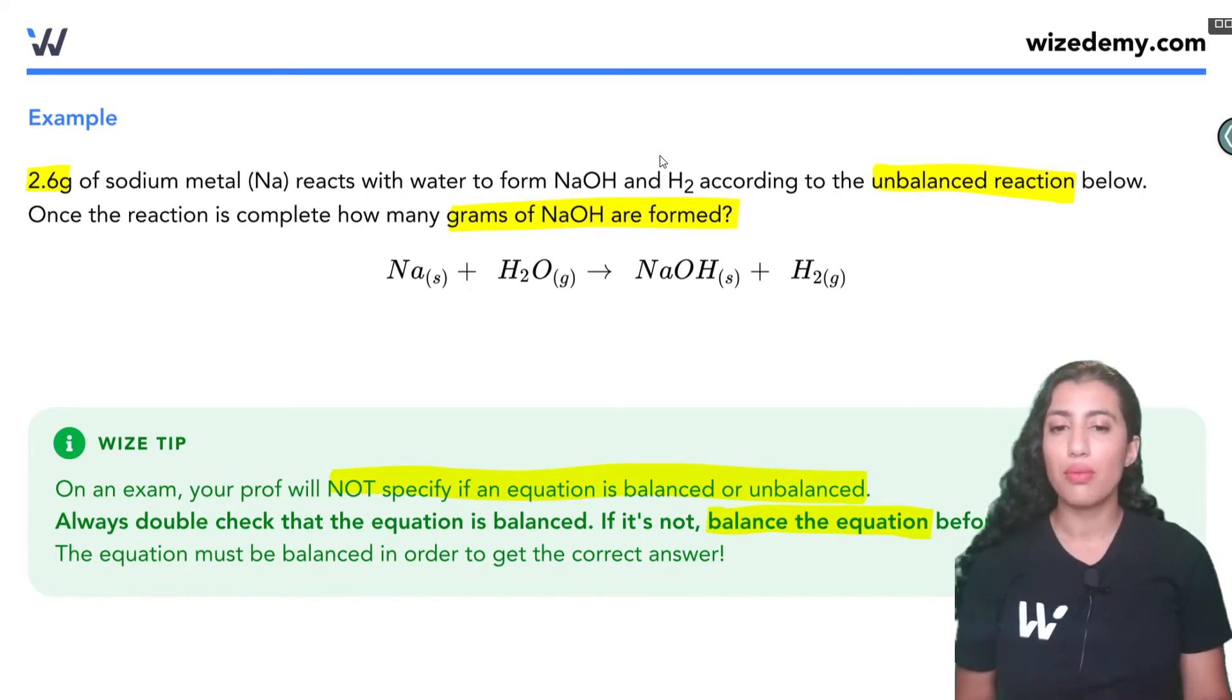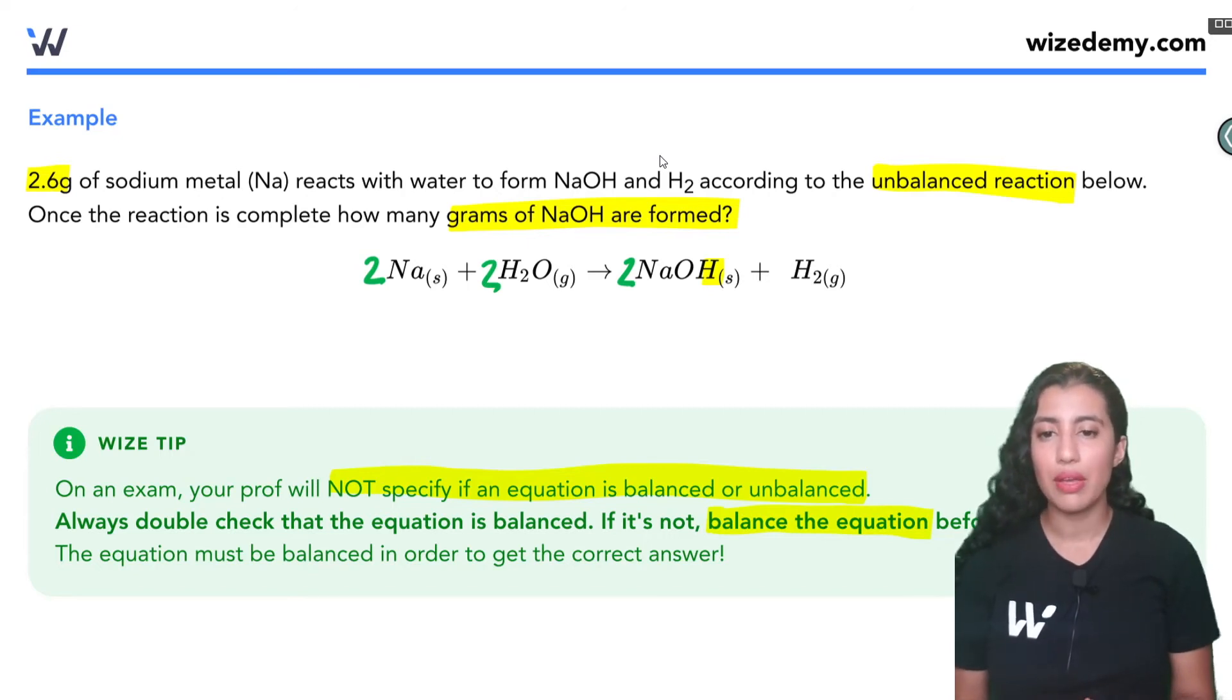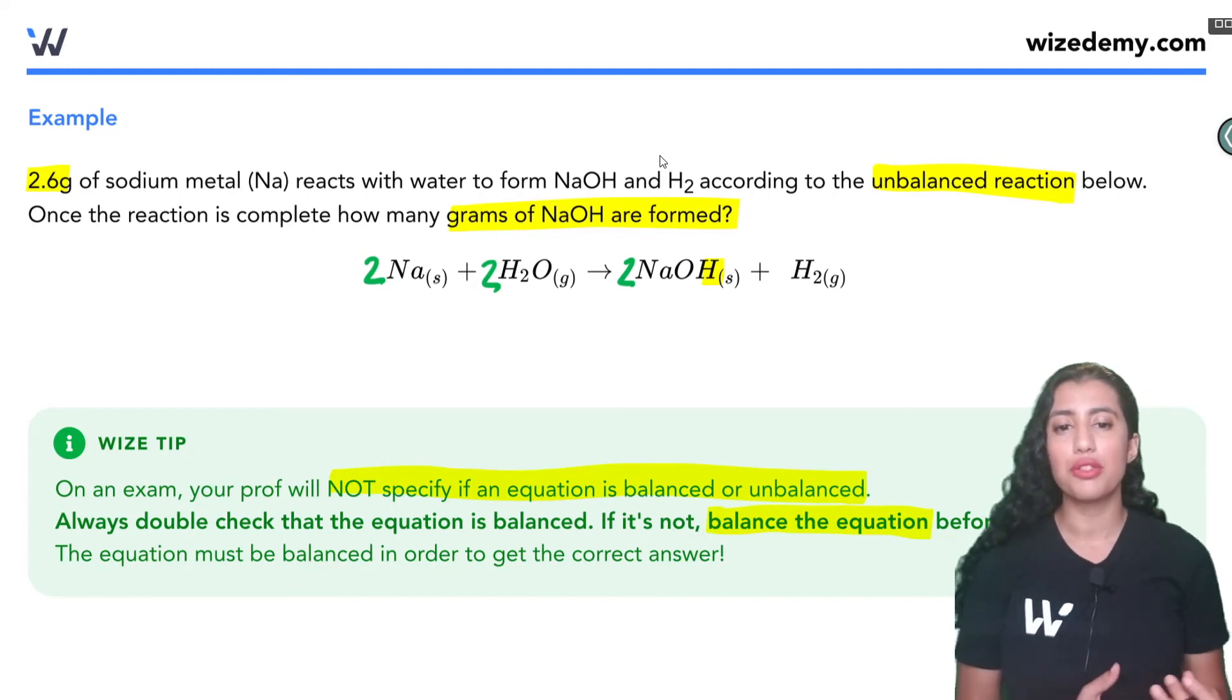So why don't we balance this one. On the left we have one sodium atom, on the right we also have one sodium atom. So perfect. On the left we have one oxygen, on the right we also have one oxygen atom, great. On the left we have two hydrogen atoms and on the right we have three hydrogen atoms and on the right I see that there's one hydrogen on its own. So that's going to make the number of hydrogens on the right side be an odd number which we don't want. So we're going to want to multiply this by two to make an even number so now we have two sodium atoms. So I'm just going to change this to a two as well. We have two oxygen atoms so I have to change this to a two as well. And now let's check if the hydrogens are balanced. So on the left side we have four hydrogens and on the right side we have two plus two which is four so perfect. We now have a balanced reaction.